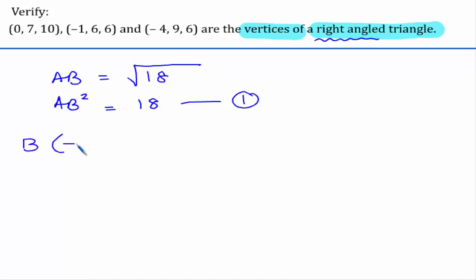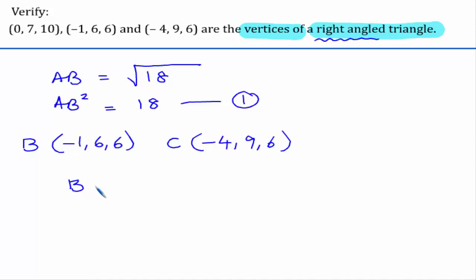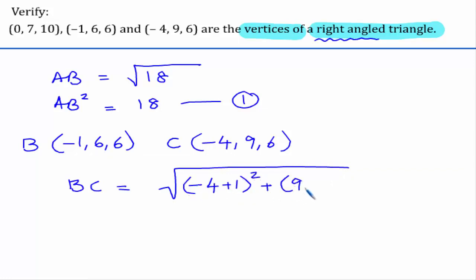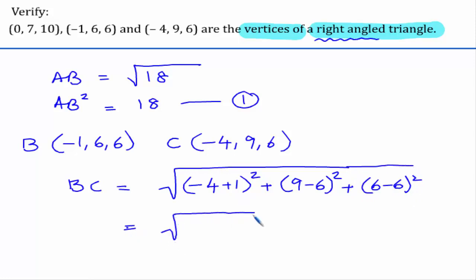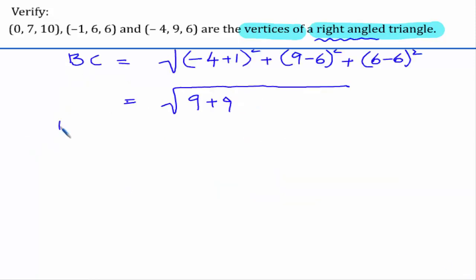Now let us consider B as (-1, 6, 6) and C as (-4, 9, 6) and find BC. We compute: (minus 4 plus 1) whole square plus (9 minus 6) whole square plus (6 minus 6) whole square. This gives: minus 3 whole square is 9; 3 whole square is 9; and this is 0. So BC equals root 18, and similarly BC squared is 18.